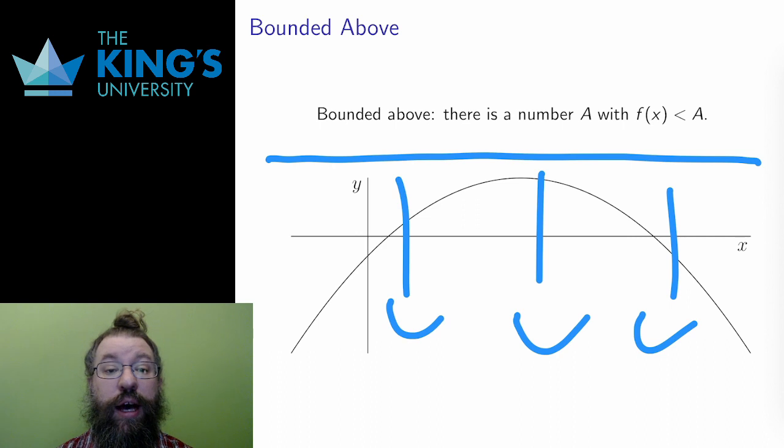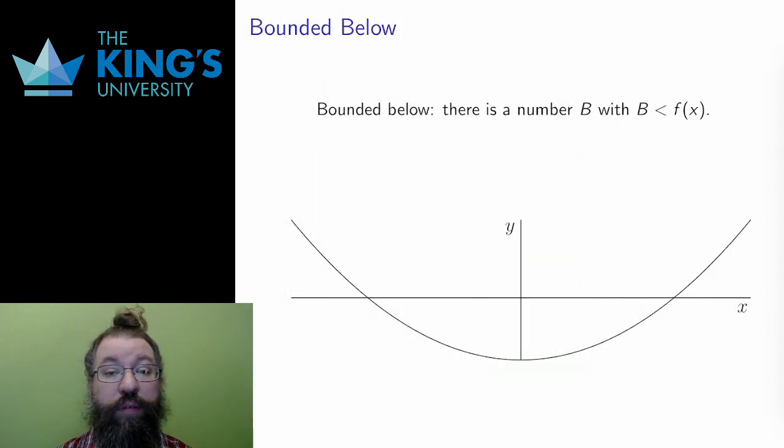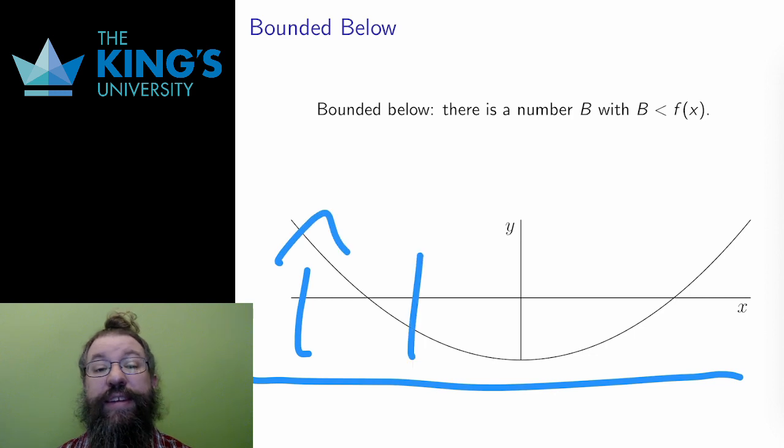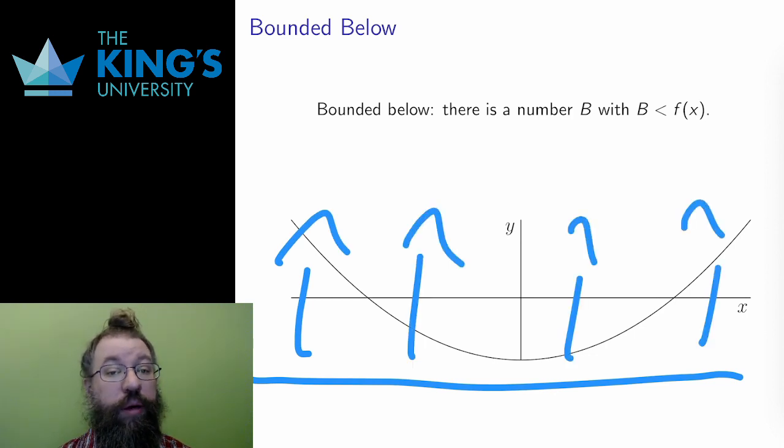And similarly, a function is bounded below if there is some number b, such that f of x is greater than b. I can again visualize this by drawing a horizontal line at y value b, and the entire graph of the function will sit above the line.